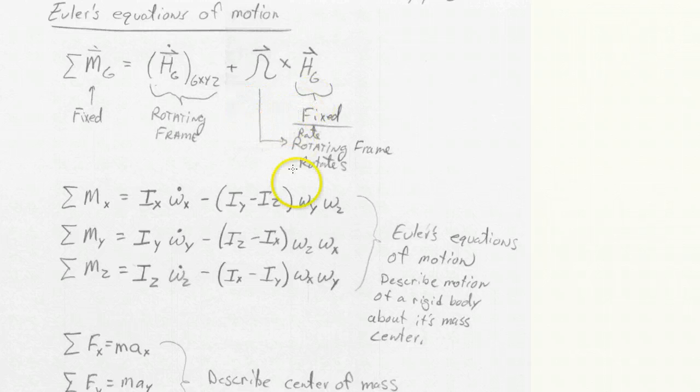And the Euler's equations are when you break this out by components and write each component. And so that's what we've got here. I sub x, y and z are the principal components of the moment of inertia tensor. And then you can see the angular velocity, the time derivative of the angular velocity here, and so on.